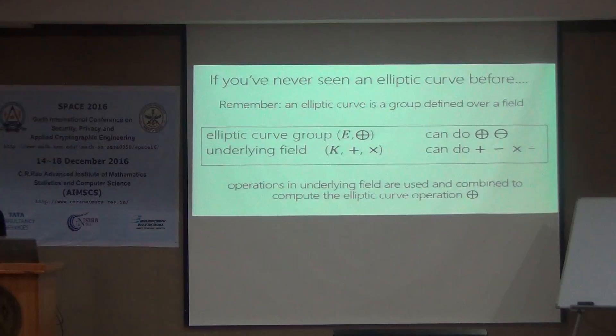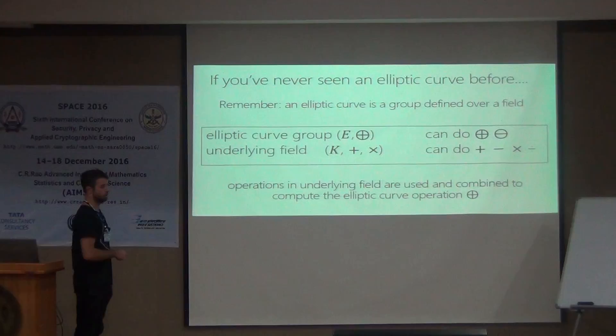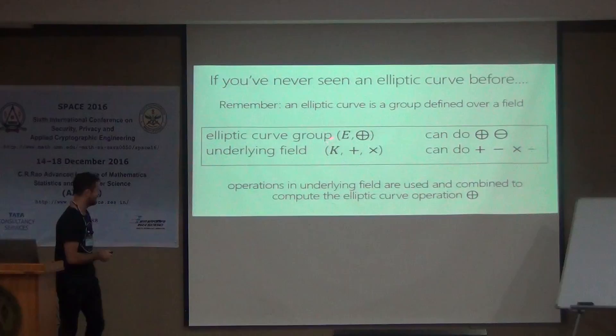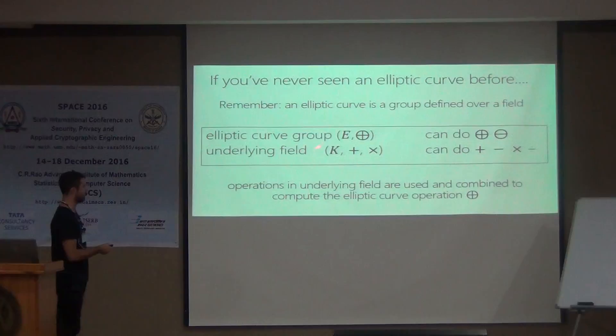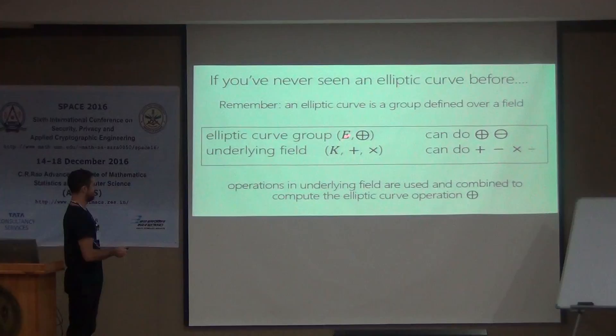If you've never seen an elliptic curve before, one thing to keep in mind — though it might be a little hard to digest at first — is that an elliptic curve is a group. The elliptic curve is a set with one operation, but it's defined over a field. We write the elliptic curve group as E with operation O+, and you can do the inverse operation O−. Because the elliptic curve is defined over a field K, to perform these operations on the elliptic curve you need to do a lot of field operations underneath.